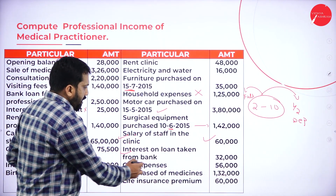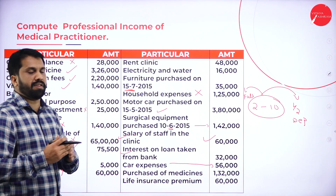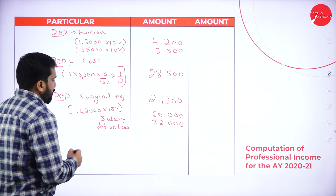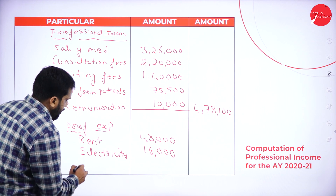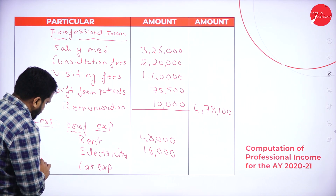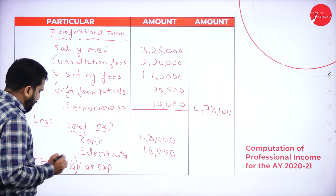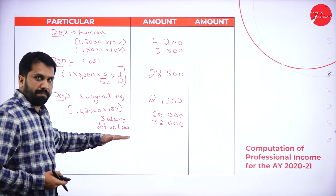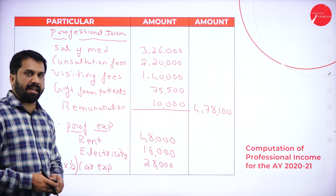Car expenses: 56,000. But half is for personal use, so only half is allowable for profession. Car expenses: 56,000 × 1/2 = 28,000.